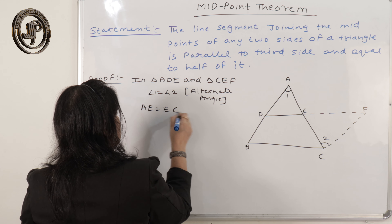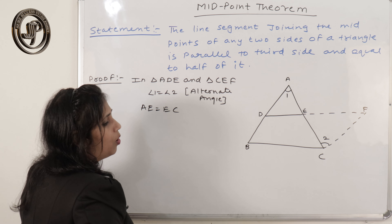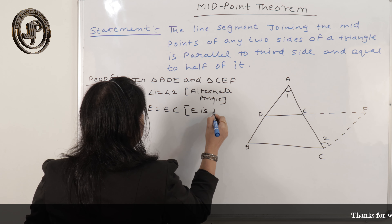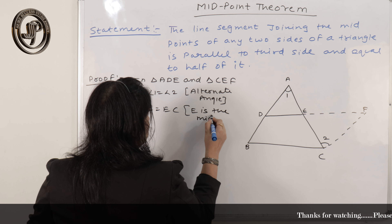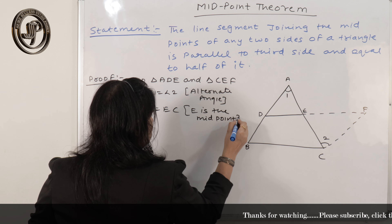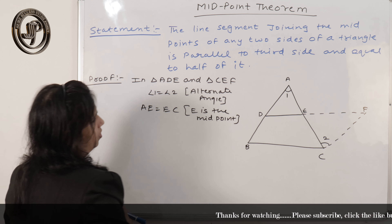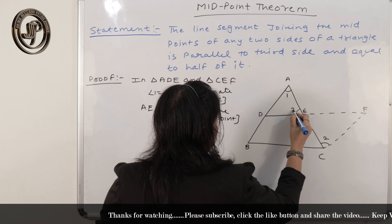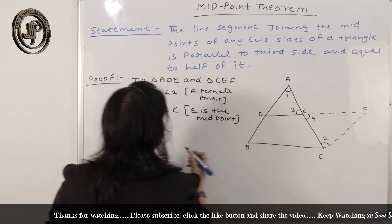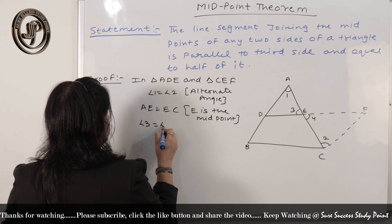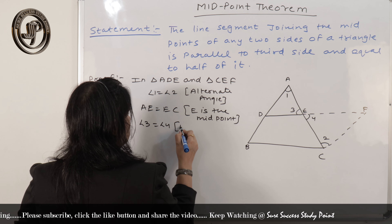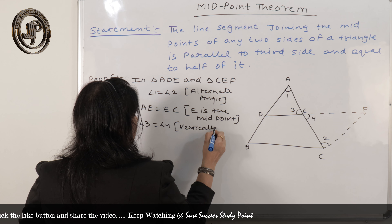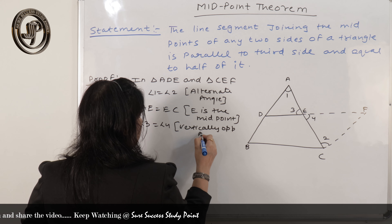Similarly, AE equals EC — why? Because E is the midpoint. And considering angle 3 and angle 4, angle 3 equals angle 4, reason: vertically opposite angles.